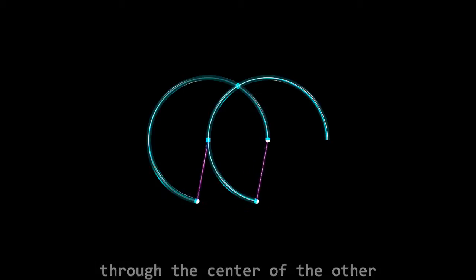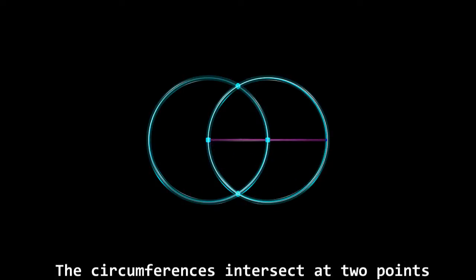We draw two circumferences so that each one passes through the center of the other. The circumferences intersect at two points.